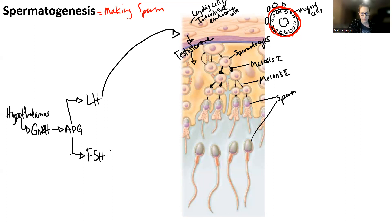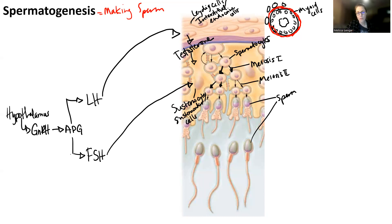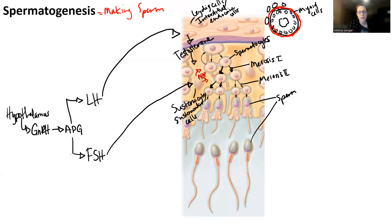FSH is going to target the cells in the middle called sustentacular cells. What those cells are going to do is release another substance — it's not exactly a hormone — called ABP, androgen binding protein. Androgen binding protein helps testosterone remain in the seminiferous tubule for a longer time, and it helps with spermatogenesis.